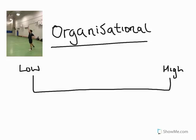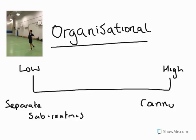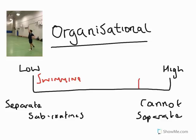Finally, we have the organisational continuum — whether the skill is of high or low organisation. A low organisation skill has subroutines that can be separated. A highly organised skill has parts that cannot be separated. For example, swimming is a low organisation skill because we can practise the arms, legs, and breathing separately. The badminton overhead is highly organised — it's very difficult to separate the different actions from each other because one flows into the other. Good luck with your revision; please provide feedback via Twitter, email, or the Wallwisher page.